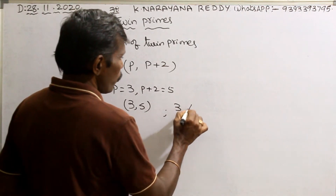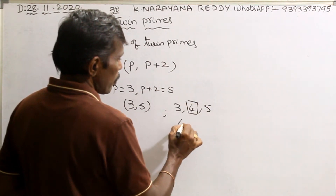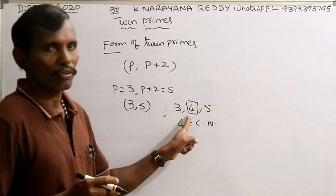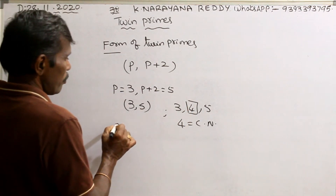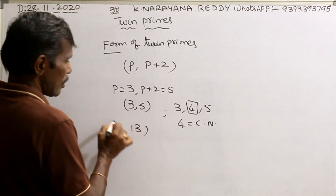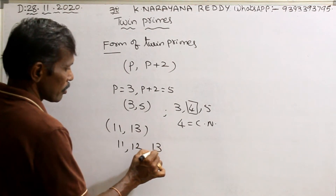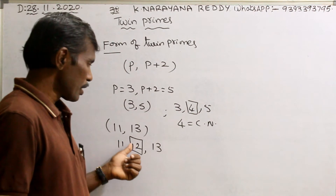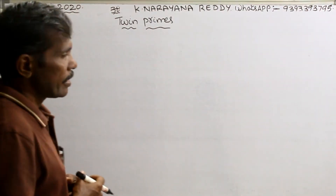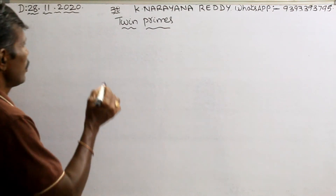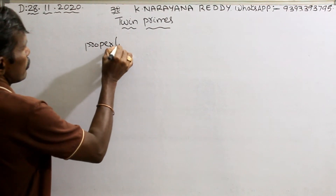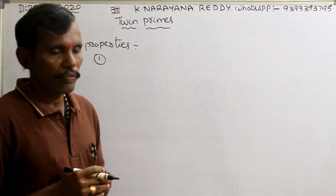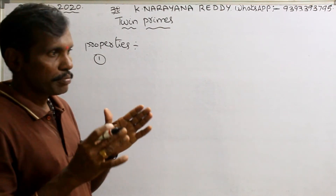Here, between three and five, the number four is composite. Four is a composite number between the two primes. In the same manner, take another pair: (11, 13). Here, 11, 12, 13 — twelve is a composite number between these two prime numbers.